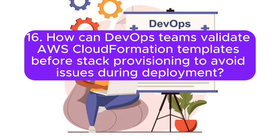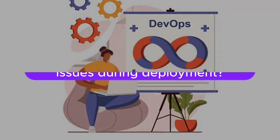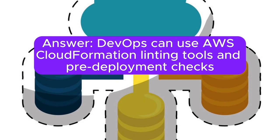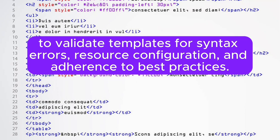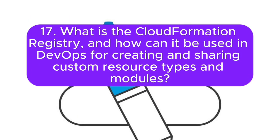Question 16: How can DevOps teams validate AWS CloudFormation templates before stack provisioning to avoid issues during deployment? Answer: DevOps can use AWS CloudFormation linting tools and pre-deployment checks to validate templates for syntax errors, resource configuration, and adherence to best practices.